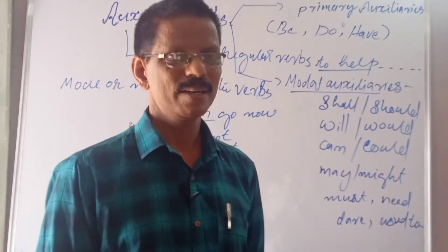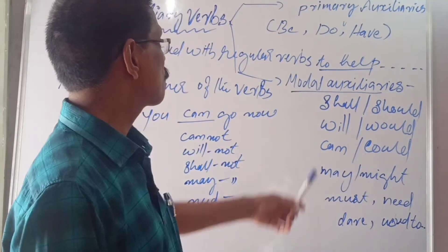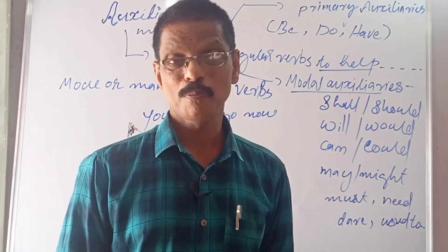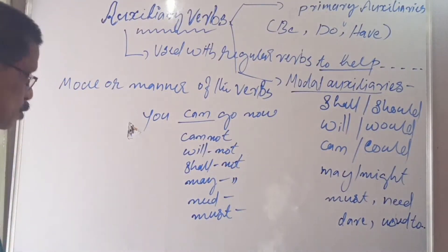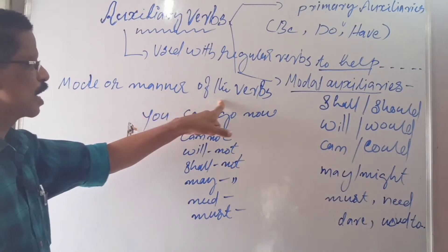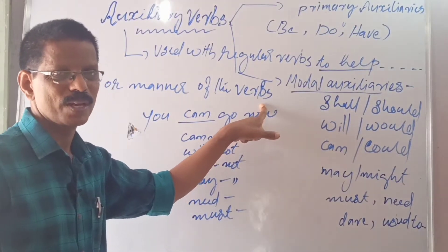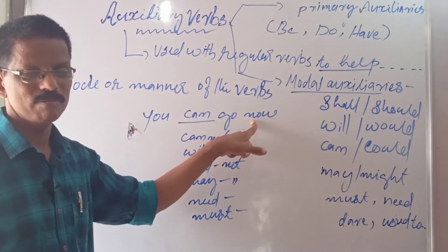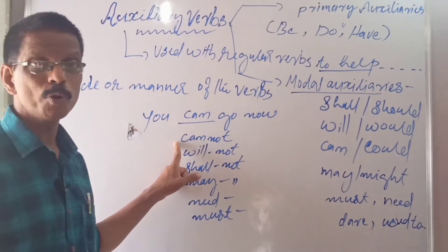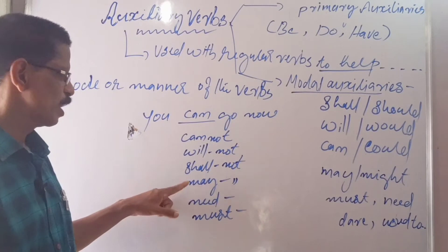What is meant by a modal auxiliary? Modal auxiliaries or modals express the mode or manner of the verbs that follow them. For example: 'You can go now' means you are permitted to. 'You cannot go now' means you are not permitted. 'You will' indicates future. 'You may' indicates possibility.